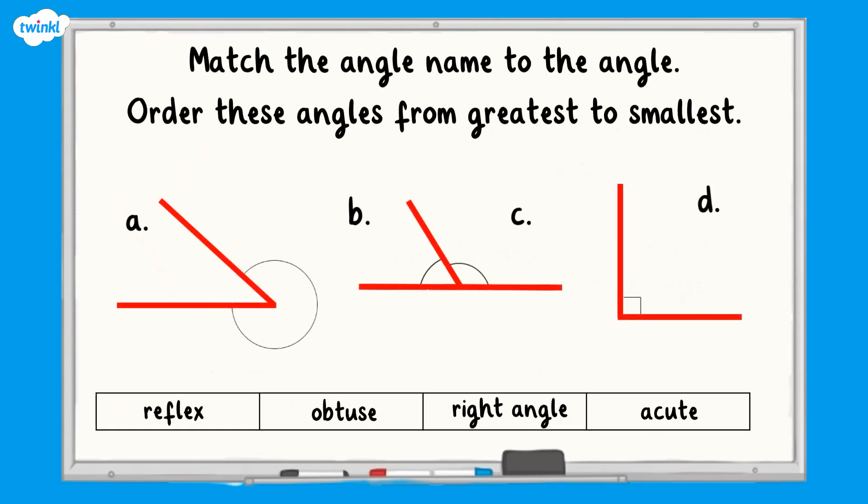Have a go at the following questions to help you revise the four angle types. Match the angle name to the angle then order the angles from greatest to smallest. Pause the video here then press play when you are ready. All done? Let's have a look at the answer.